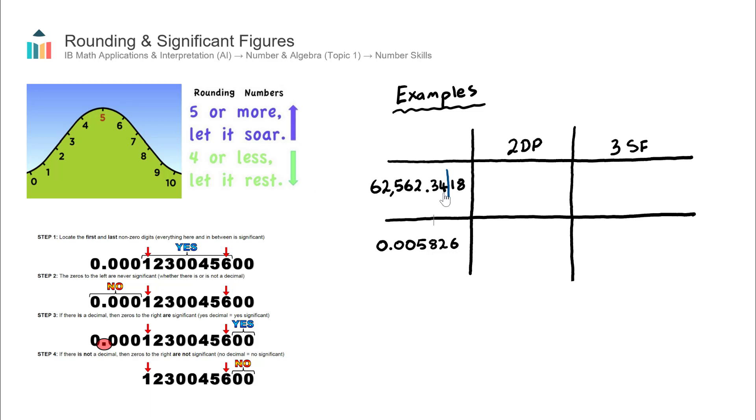What that means is I'm not going to change the four here, the number to the left hand side of this blue line. So rounding, this becomes 62,562.34. I don't increase the four to five, I just leave it as is, I round off. So there is the first answer, I rounded the number to two decimal places.